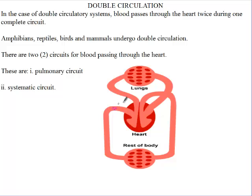Blood moves from the body into the heart. It is pumped to the lungs, gets back from the lungs, and then it is pumped out to the body. So what we clearly see is that in one cycle, the blood enters the heart twice.